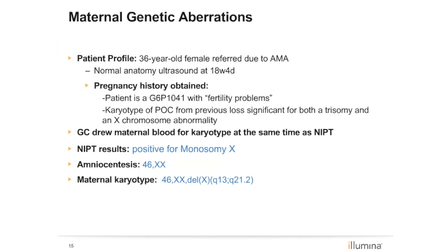This patient is a 36-year-old female with a normal ultrasound at 18 weeks and a clinical indication of advanced maternal age. The patient's history was also significant for fertility problems and a previous pregnancy loss with products of conception showing both an X chromosome abnormality and an unspecified trisomy. NIPT and maternal blood karyotype were drawn at the same time. The NIPT results were positive for monosomy X, and the patient underwent amniocentesis, which showed a normal female karyotype, 46XX. Interestingly, the patient's blood karyotype came back significant for a deletion on the long arm of chromosome X. The NIPT was discordant with the fetus but had a biological basis as it was concordant with the maternal karyotype.